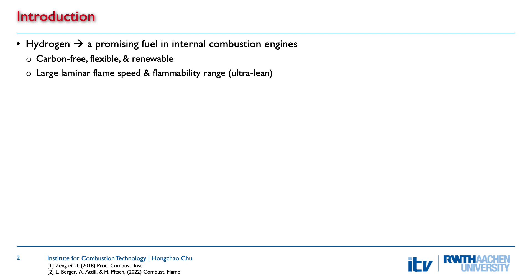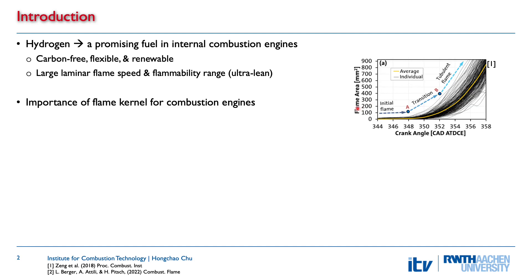The high laminar flame speed and large flammability range of hydrogen enable ultra-lean operation, which can reduce emissions and increase thermal efficiency. Experimental studies have shown that the early combustion phase is very important, especially the transition from the ignited laminar flame to turbulent flames, which will affect the whole combustion stroke in internal combustion engines. Therefore, it is interesting to investigate the early flame kernel development.